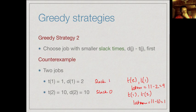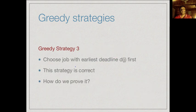So although our intuition told us to pick the smaller slack time, that is actually not the good strategy. It turns out that a greedy strategy that does work is to choose the job with the earliest deadline d first. The challenge is to prove that this strategy is in fact correct.